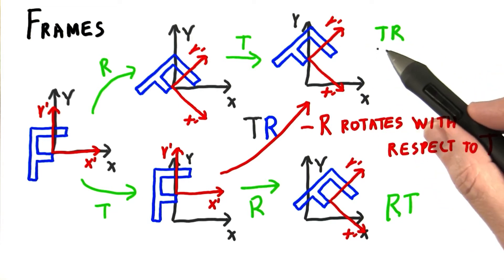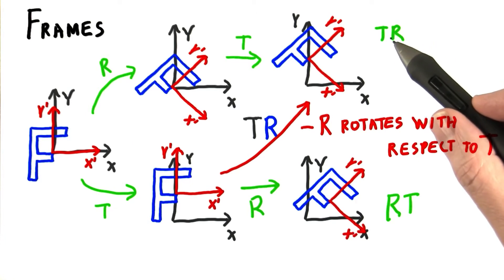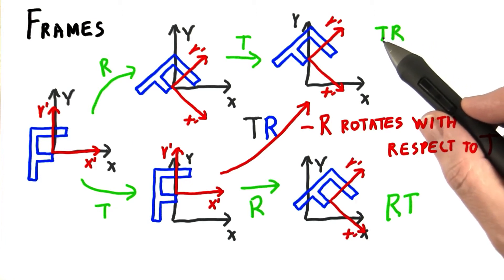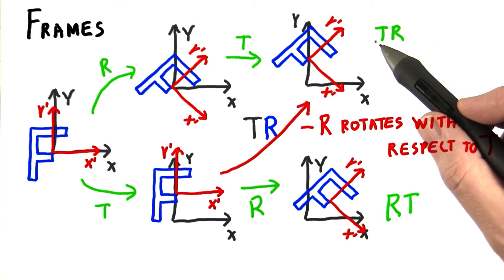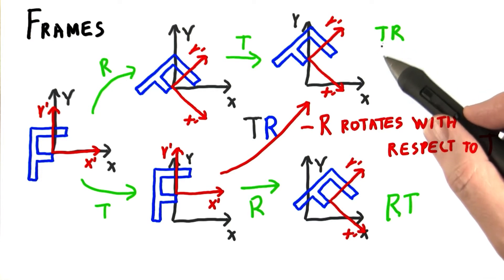Another way to say this is that the first matrix to the right of some given set of matrices is transforming the object with respect to that set — in other words, everything to the left of it. For example, on the top here, the rotation is transforming the F with respect to the frame of reference of the T translation to its left.